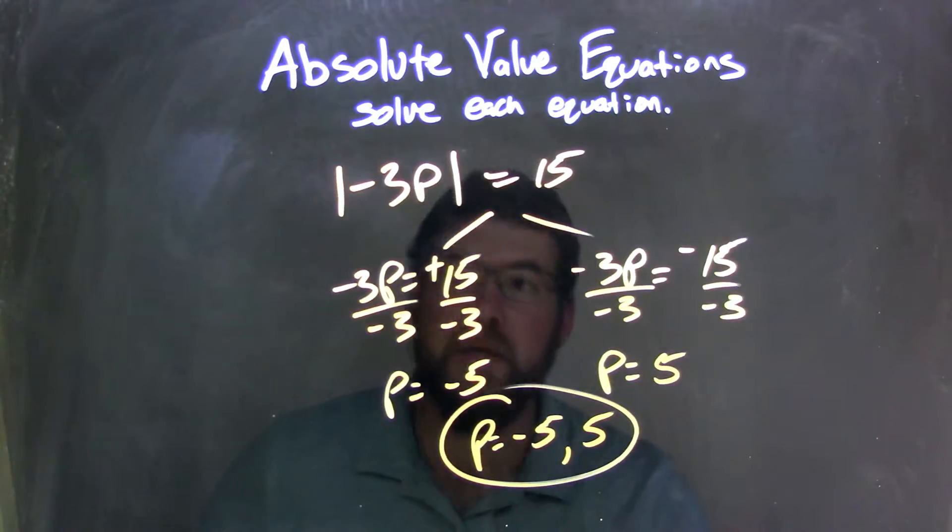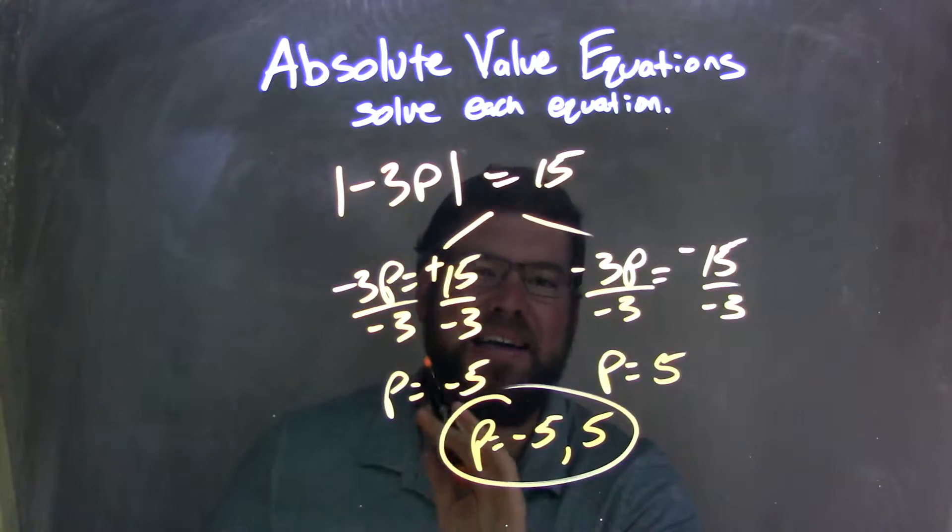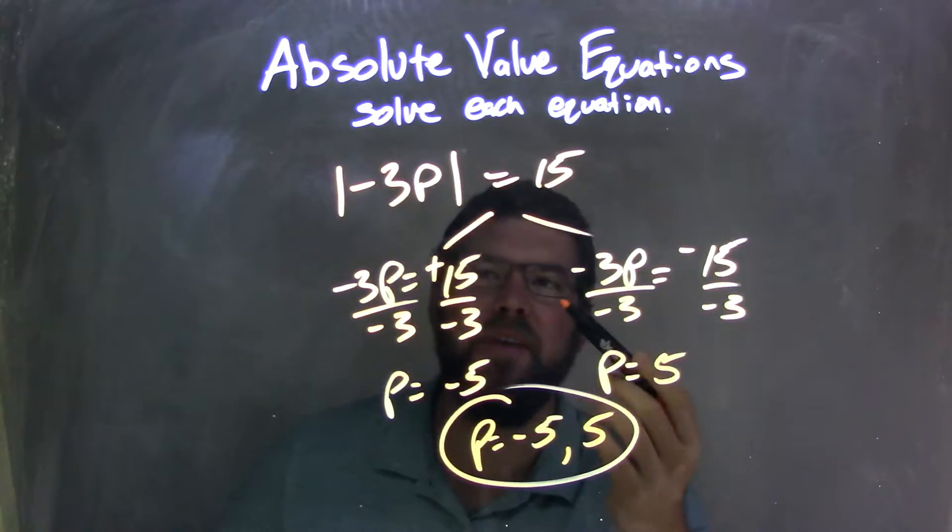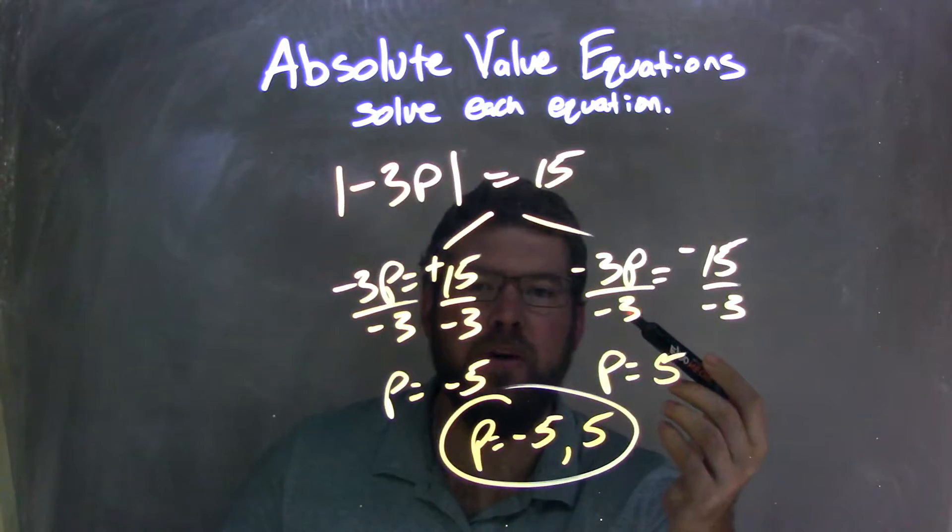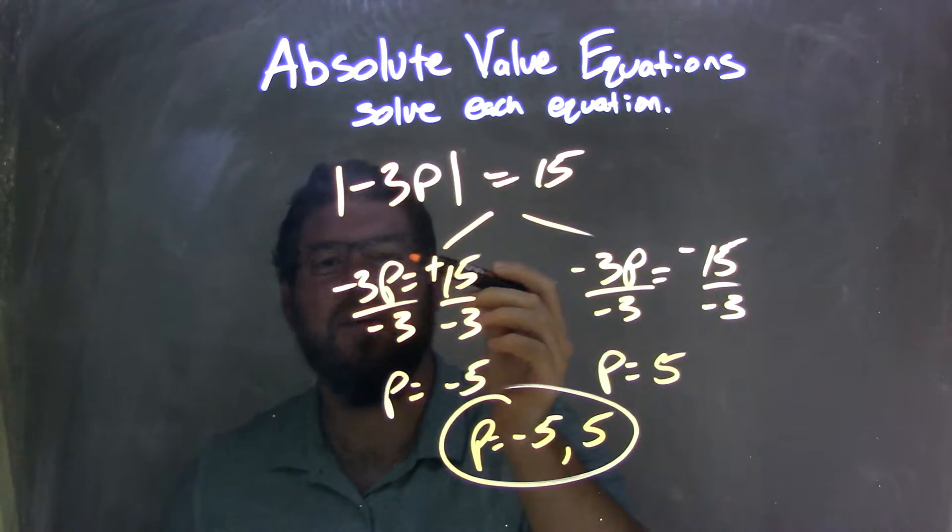So let's recap. We started with the absolute value of negative 3p equals 15. The negative 3p was isolated, it's already by itself. So when that happens, I can break them apart into two equations. The absolute value here comes down without the absolute value.